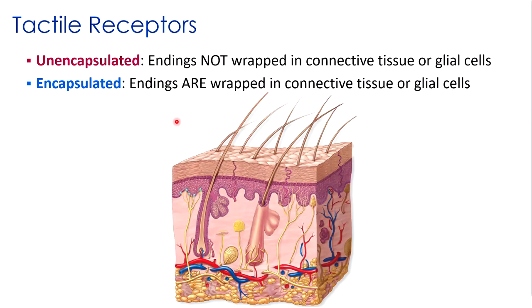The last topic under the general senses is tactile receptors in more detail. Tactile receptors are the most numerous type of receptor in your body, located in the dermis and subcutaneous layer of the skin, with some penetrating into the lower levels of the epidermis. These are mechanoreceptors that react to touch, pressure, and vibration. Their exact structure helps determine how sensitive the sensation is and how wide its receptive field is — fine touch receptors are extremely sensitive with a very small receptive field, while crude touch and deep pressure provide less detailed information over a broader range.